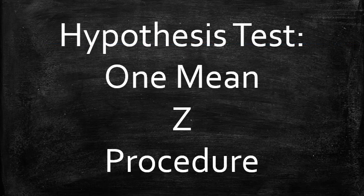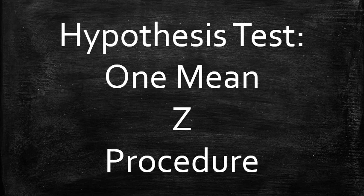I just showed how to apply the 1-mean-z procedure for testing a statistical claim about a population mean when the population standard deviation is given.